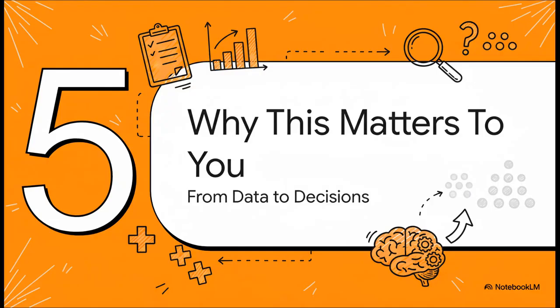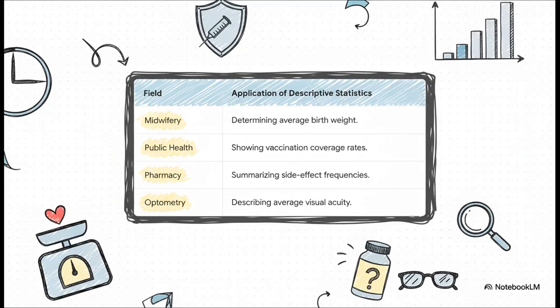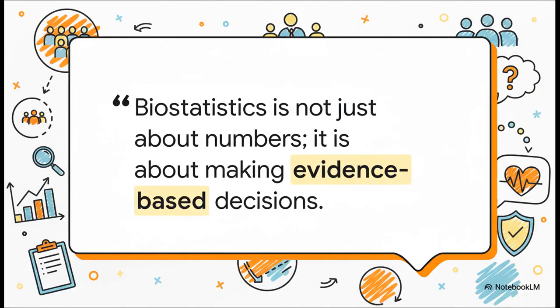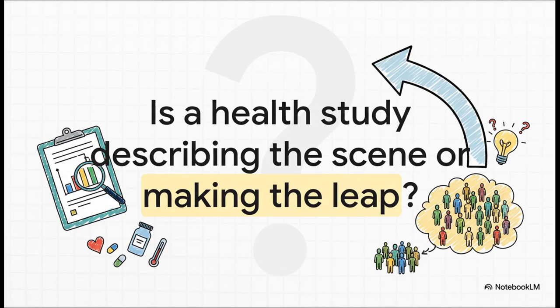So why should you really care about any of this? Because this two-step dance between describing and inferring is the engine running behind nearly every single health headline you will ever read — from public health campaigns tracking vaccination rates, all the way to your local pharmacist summarizing side effects. It all starts with descriptive statistics, foundational data that professionals rely on every single day. The ultimate goal isn't just to crunch numbers — it's to use that data to make smarter, better, more informed decisions that actually improve people's health. Next time you read a health study, just ask yourself: is it just describing the scene, or is it making the leap? Are you looking at the forensics report or the detective's final conclusion?